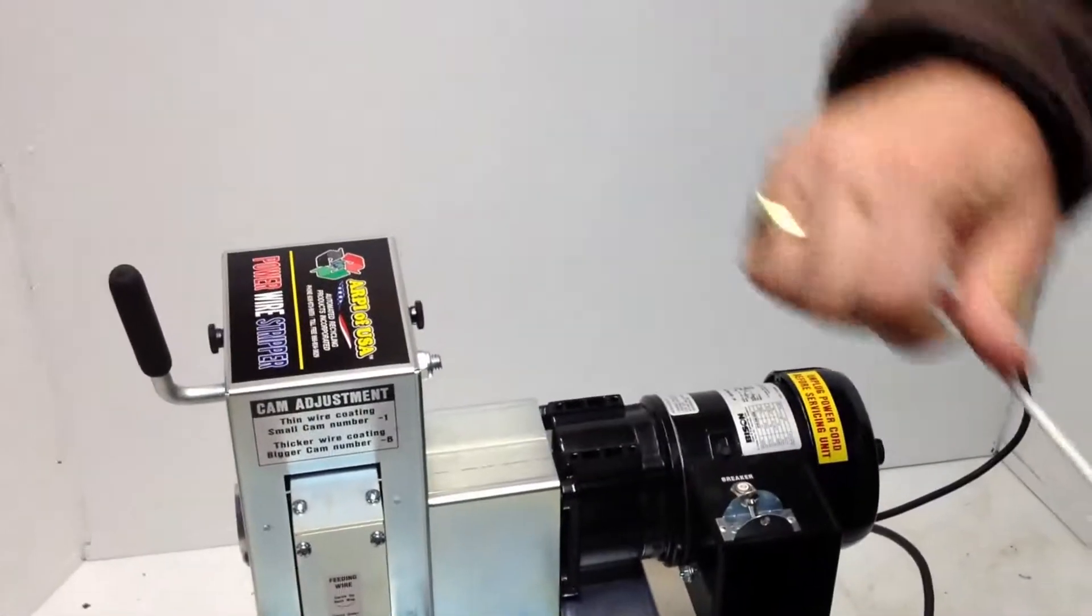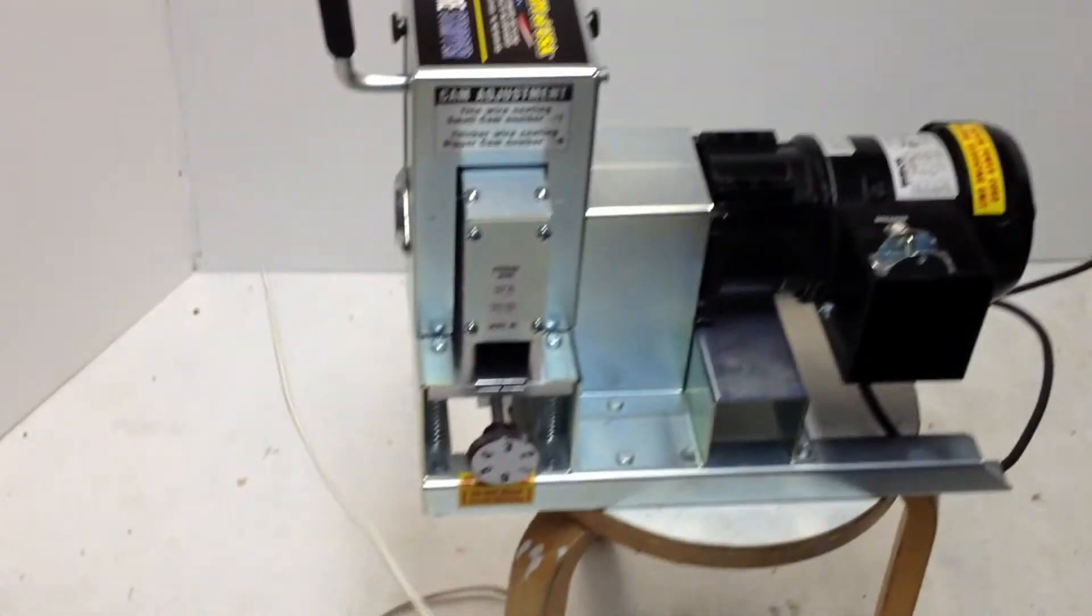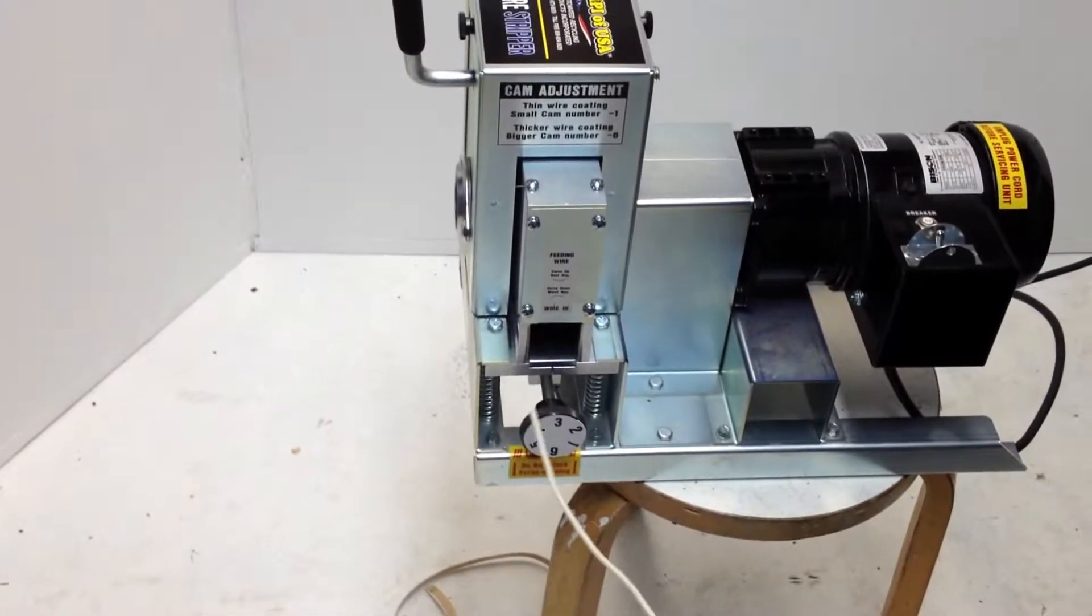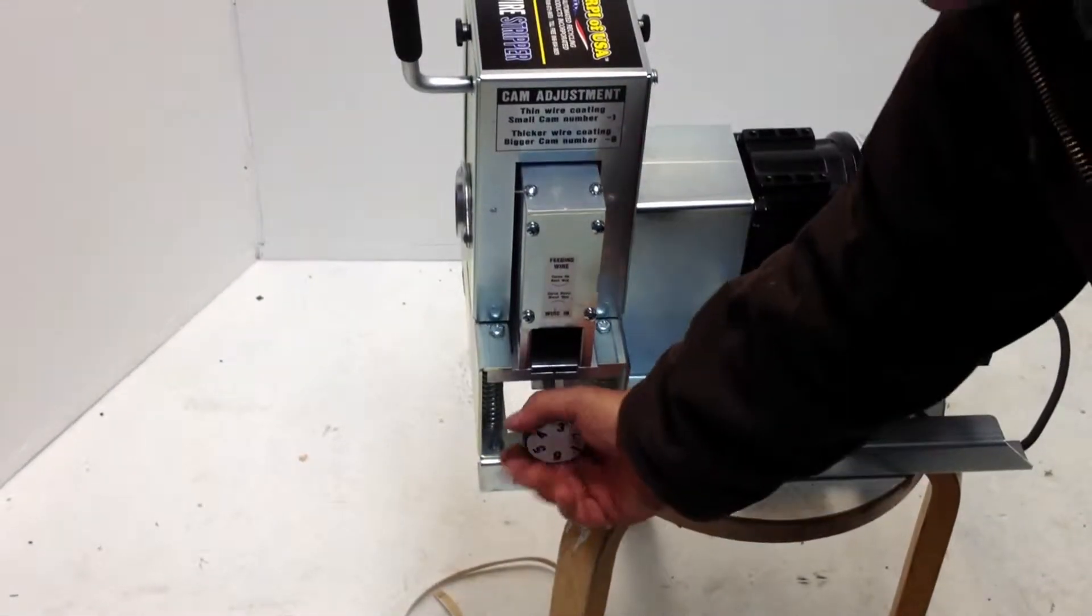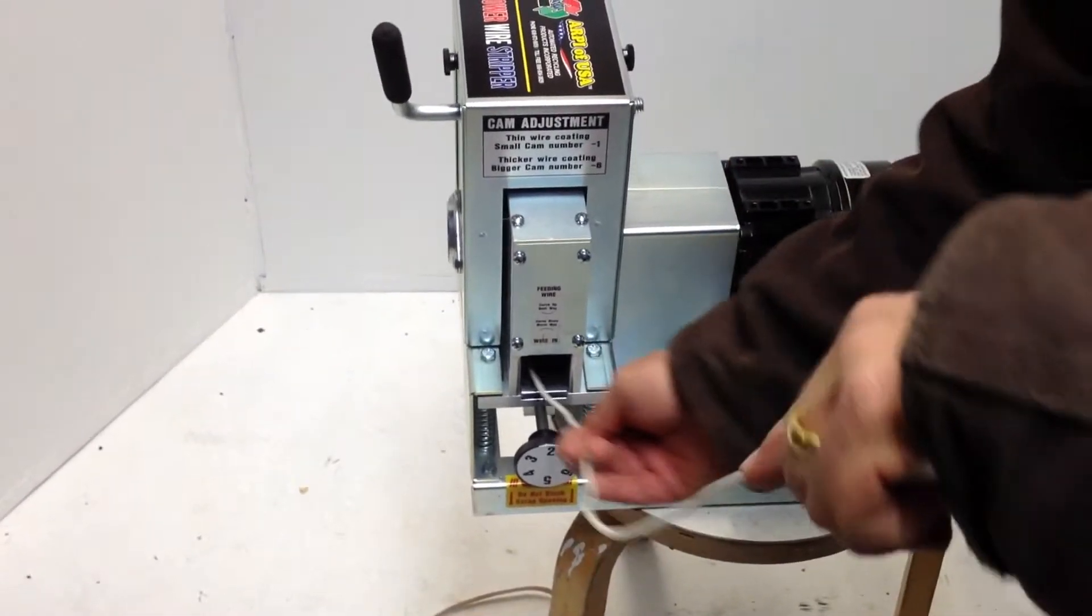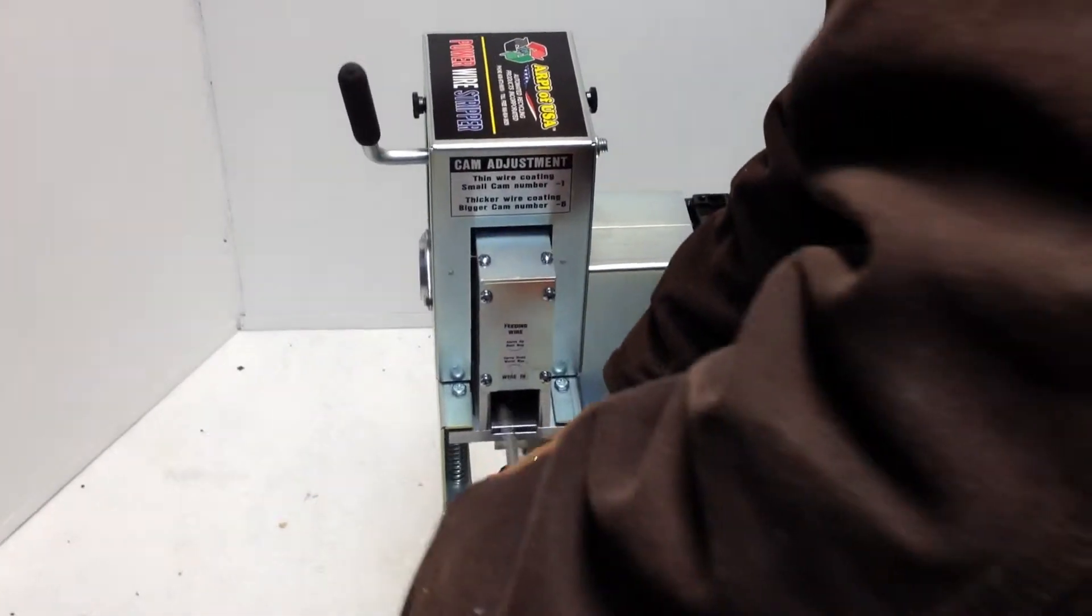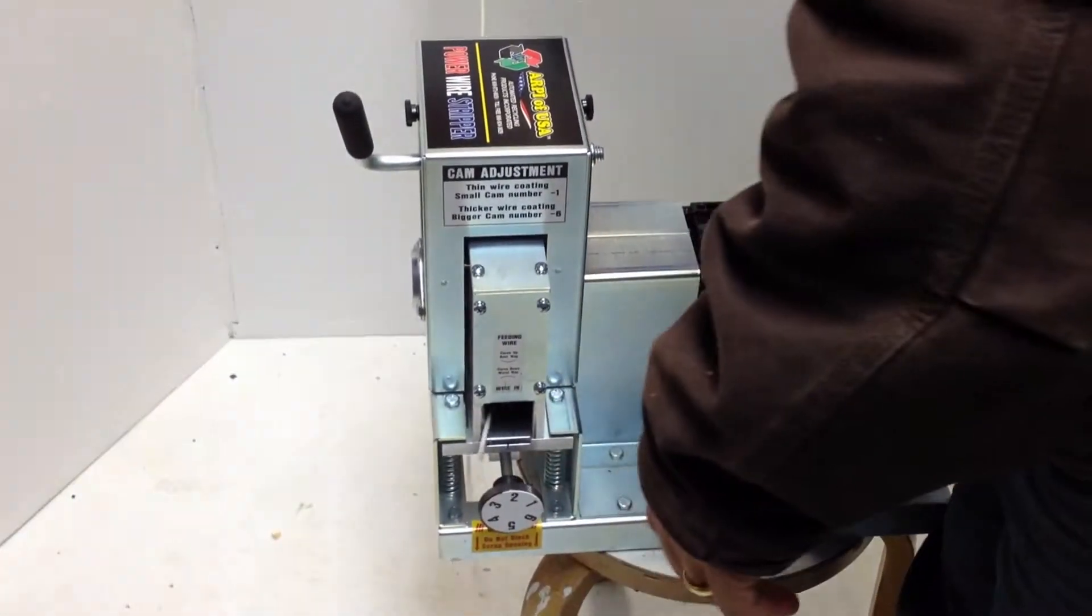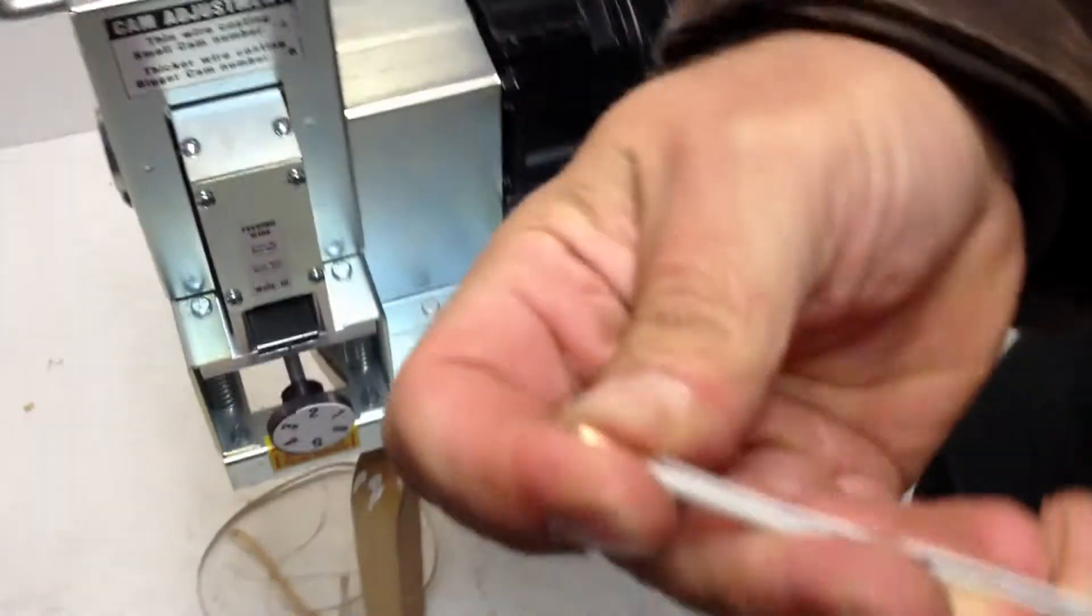When you feed wire on it, make sure that the bow of the wire is up, not down. I'm going to try it at level two on this one and see how it goes. What that did was take a piece of the outer layer off all the way down and you've stripped your wire.